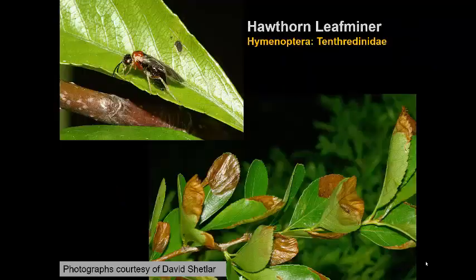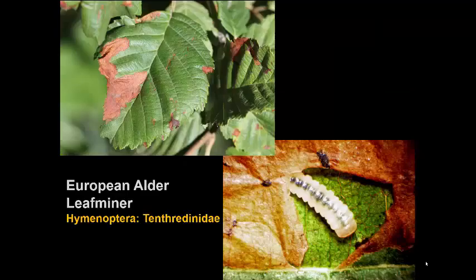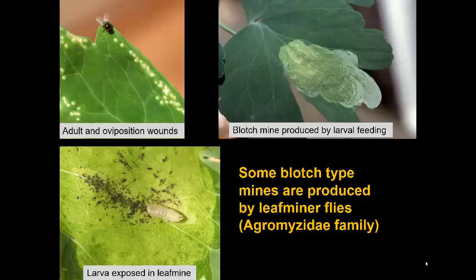Hawthorn has a leaf miner too — again a blotch leaf miner on certain kinds of hawthorn, not all of them but some cultivars. And the European alder leaf miner, another non-native species, produces a blotch leaf mine in various kinds of alder.